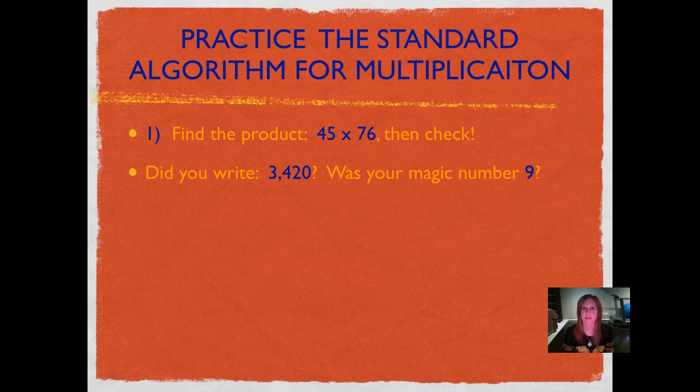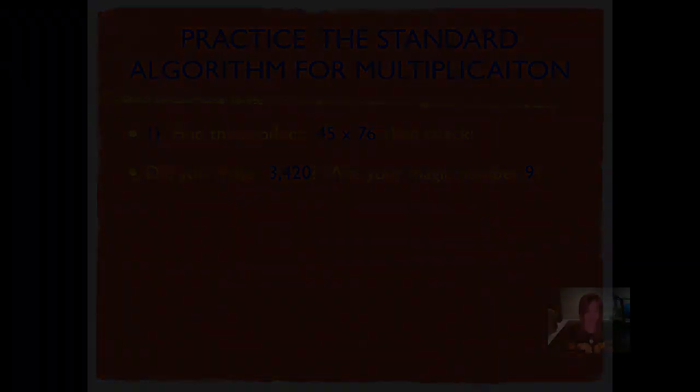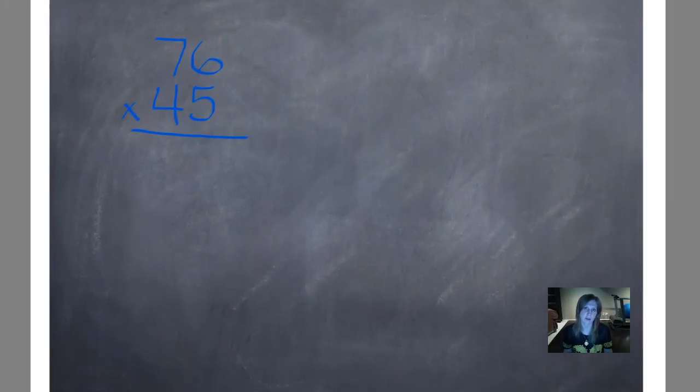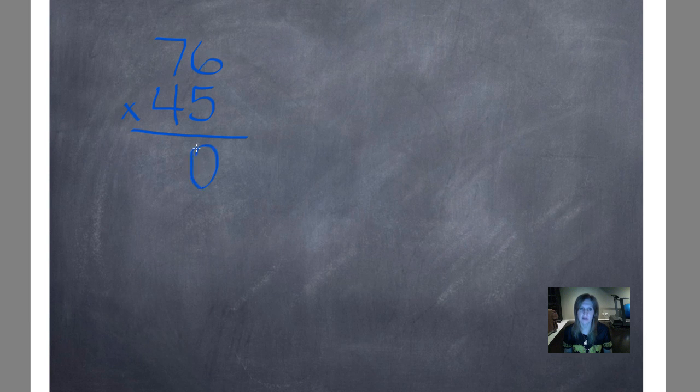Did you write 3,420? Was your magic number 9? Let's see how we did that. Here's our problem written in standard algorithm form: 76 times 45. I wrote the larger number on top, and we're going to start multiplying by the number in the ones place. So 5 times 6 is 30 — put our 0 there and carry our 3. 5 times 7 is 35, plus 3 is 38. Write 38 right down below. And remember: X, O, and kisses to go.